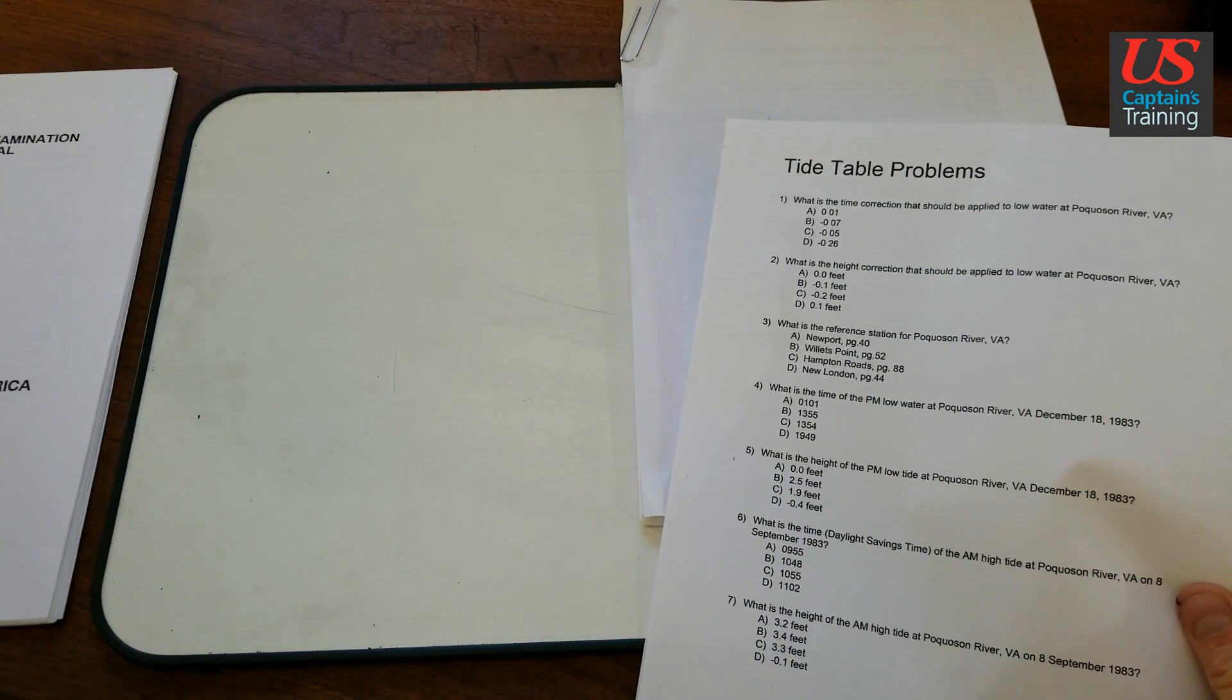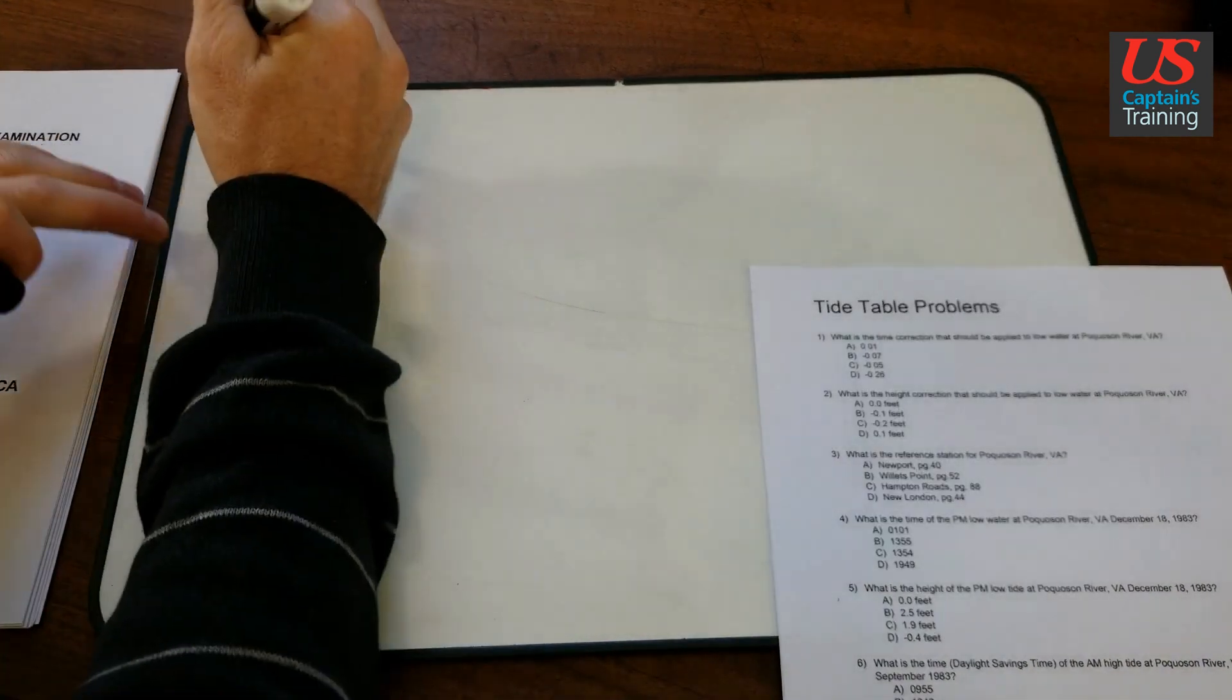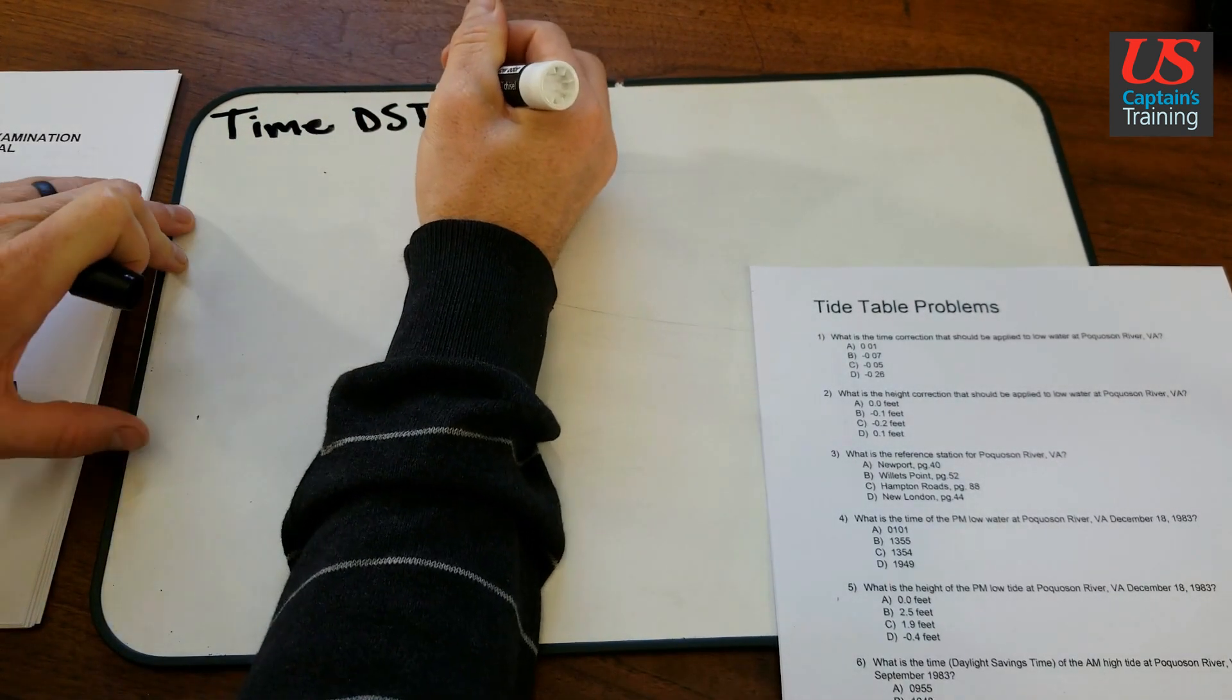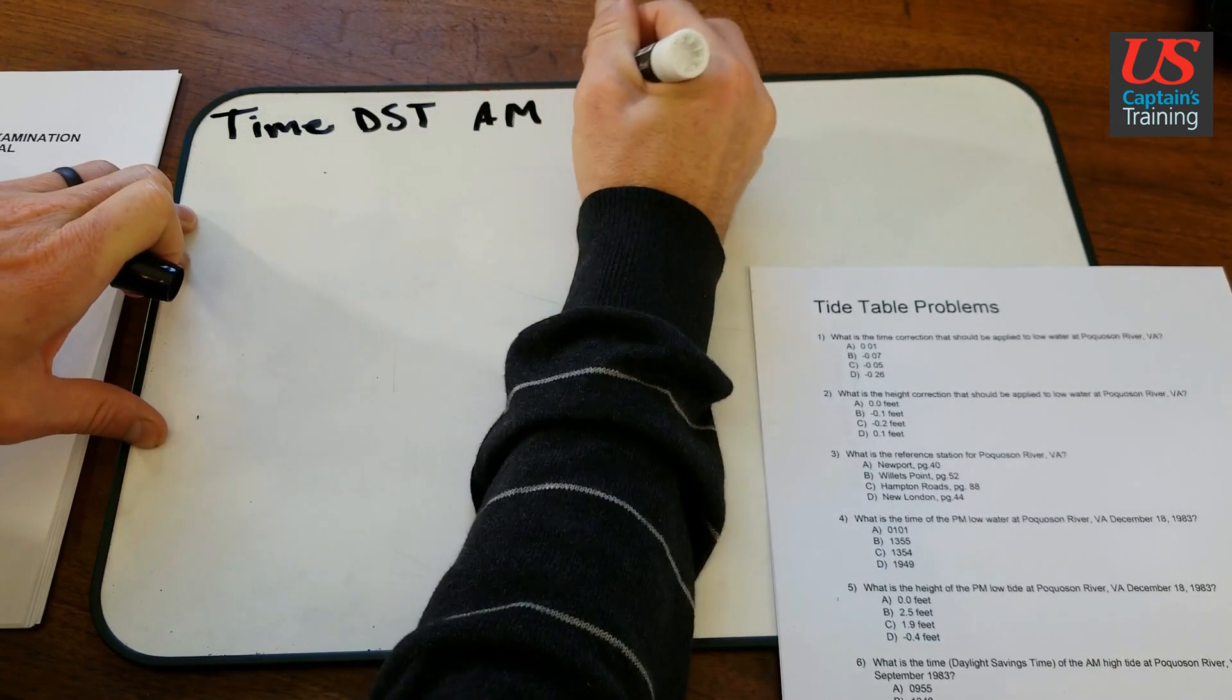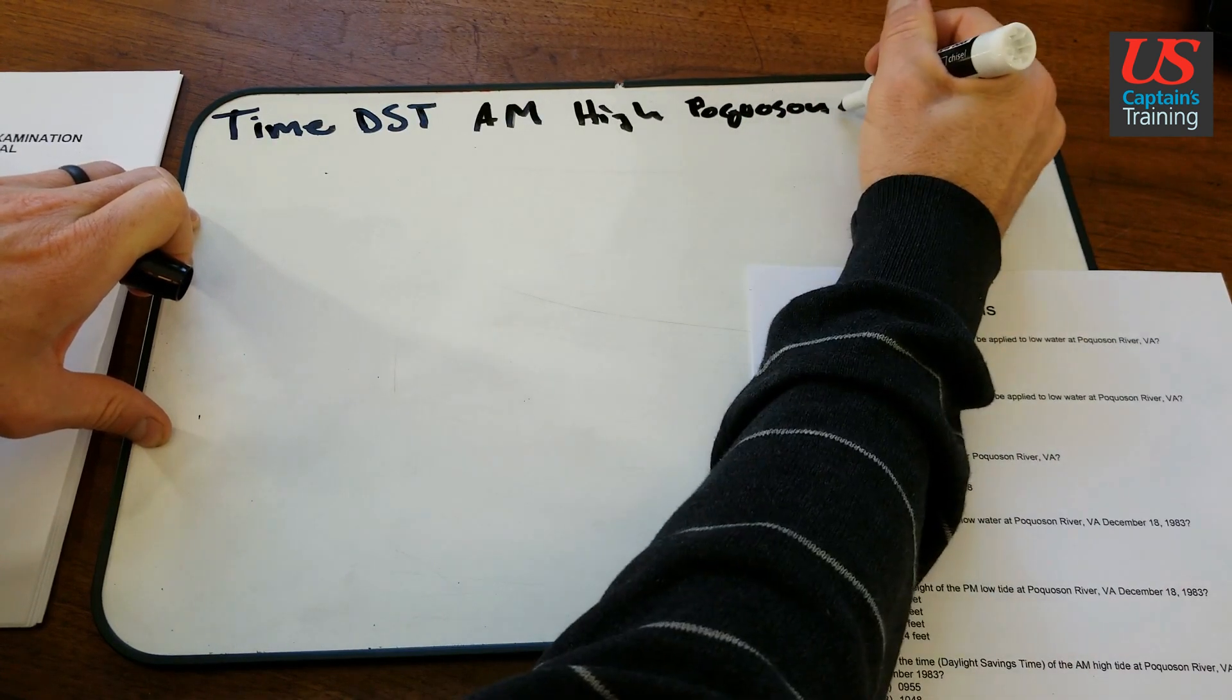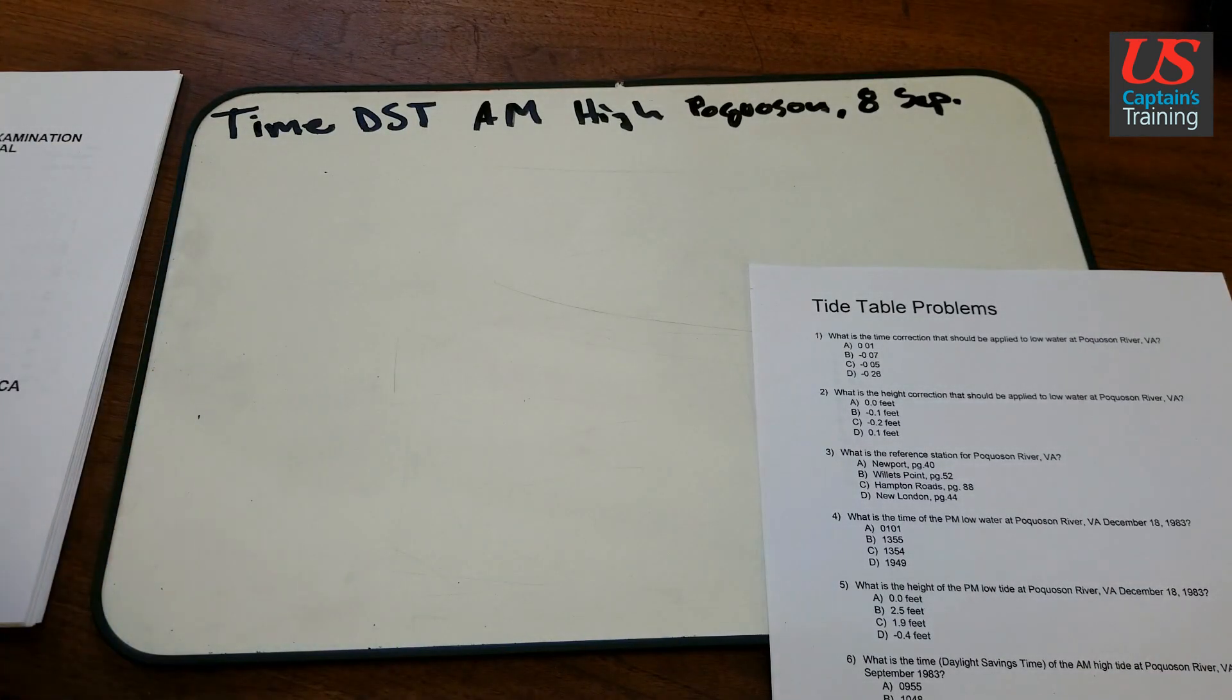Let's record the information we need to be looking for from the problem. So, time DST AM high. The time, daylight savings time DST, AM high water, Pocosin River, 8th of September. Good, so that's our problem.